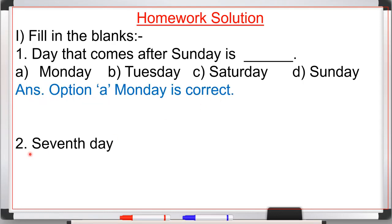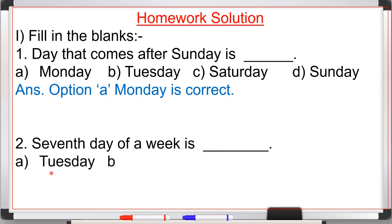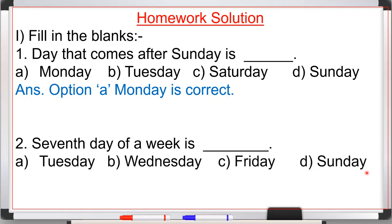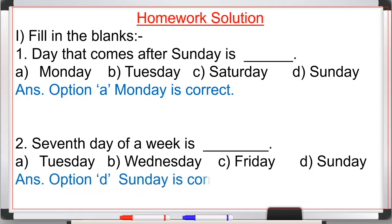Fill in the blank two: the seventh day of a week is a dash. Options are A: Tuesday, B: Wednesday, C: Friday, D: Sunday. The first day of the week is Monday. So we open our seven fingers and count — Monday, Tuesday, Wednesday, Thursday, Friday, Saturday, Sunday. Sunday is the seventh day, which is option D. So option D, Sunday, is correct.